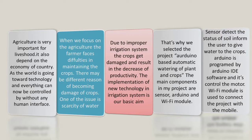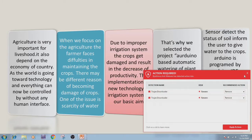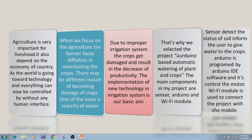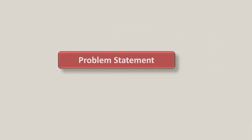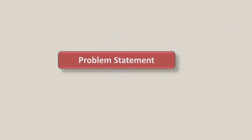That's why we selected the project: Arduino-based automatic watering of plants and crops. The main components in our project are sensors, Arduino, and a Wi-Fi module. The sensor detects the status of the soil and informs users to give water to the crops. Arduino is programmed using Arduino IDE software and controls the motor. The Wi-Fi module is used to connect the project with a mobile phone.